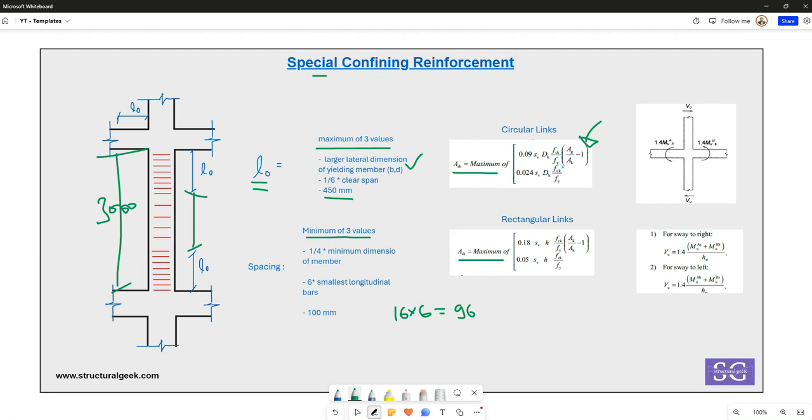FY is the yield strength of steel bar, AG is the gross cross-sectional area of the concrete section, and AK is the section that you have within the link or the stirrups. Similarly for rectangular, you have this formula.